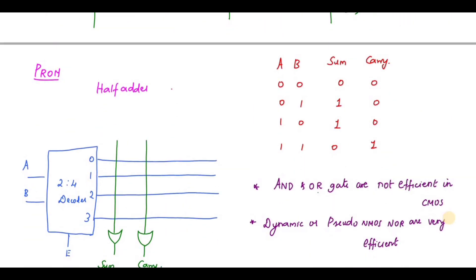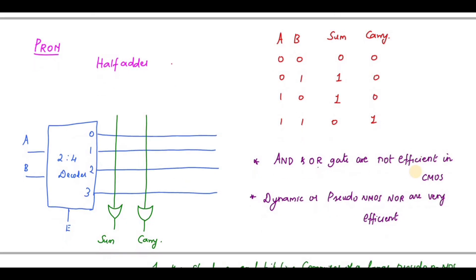Next, let us discuss Programmable Read-Only Memory (PROM). It has a decoder. To implement a half adder, the truth table has inputs A and B, and outputs Sum and Carry: 00 gives 00, 01 gives 10, 10 gives 10, and 11 gives 01. These represent word lines W0, W1, W2, and W3. Since there are two outputs (Sum and Carry), this represents BL0 and BL1.